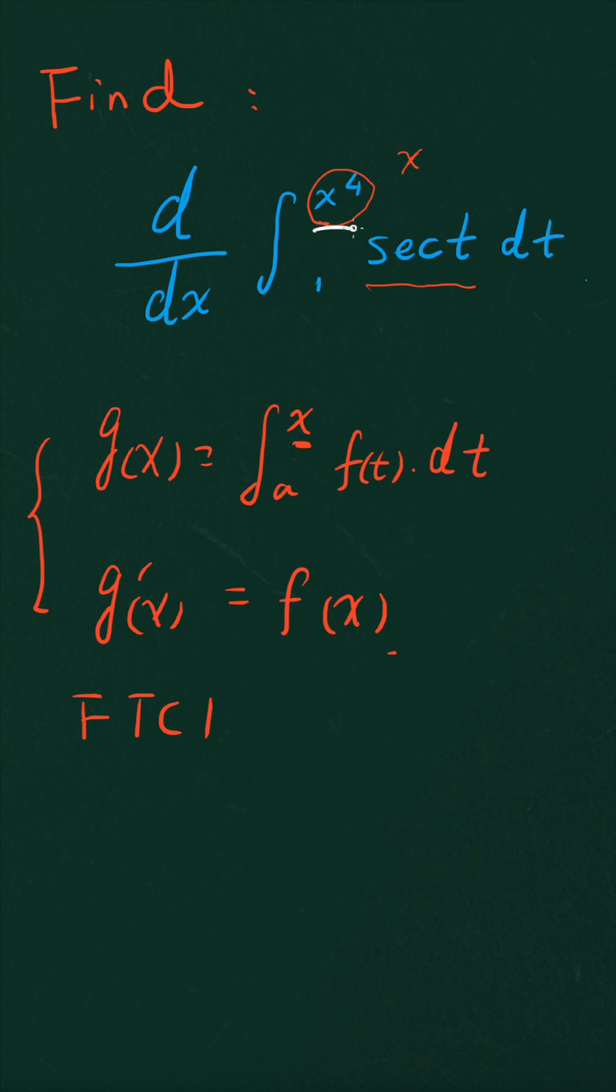So in this case, it's not x, we have to let x to the fourth power equal, let's say u, and then you have this g(u) is equal to integral from 1 to u of secant t with respect to the variable of t.